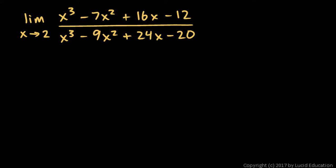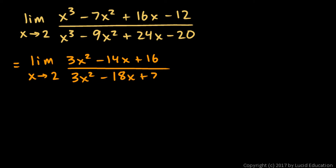So let's try L'Hopital's rule. This is the limit as X approaches 2 of the derivative of the numerator. That's 3x squared minus 14x plus 16 over the derivative of the denominator, 3x squared minus 18x plus 24.